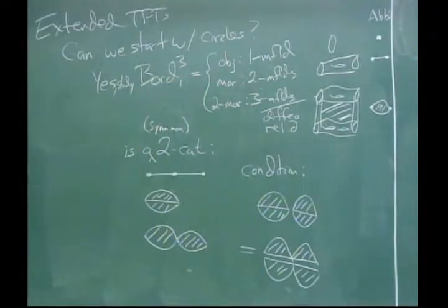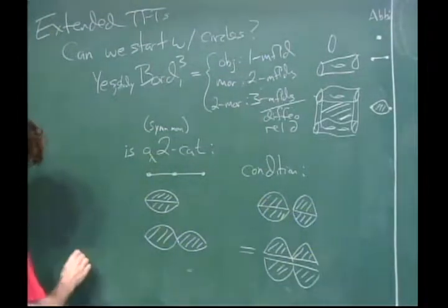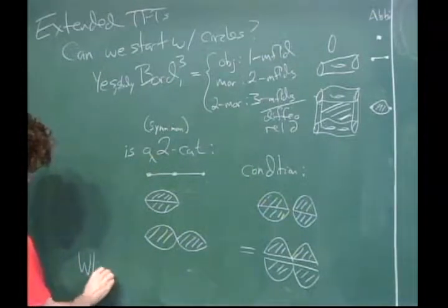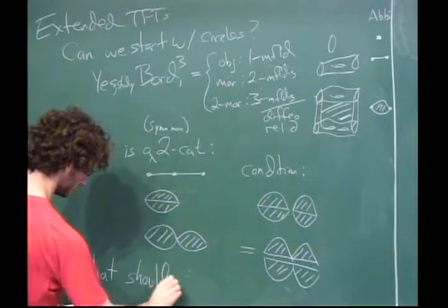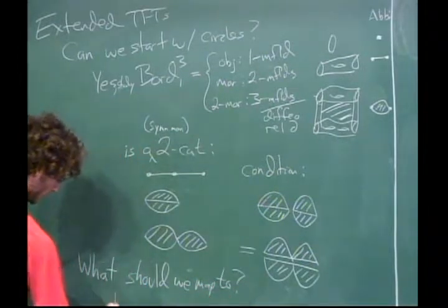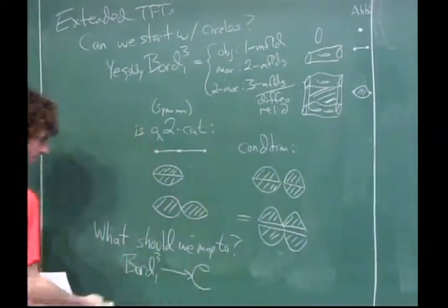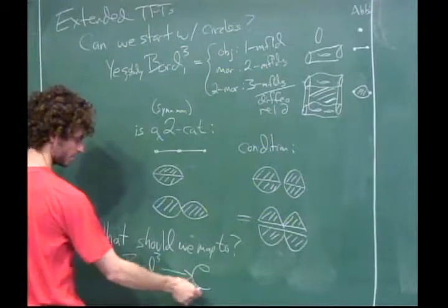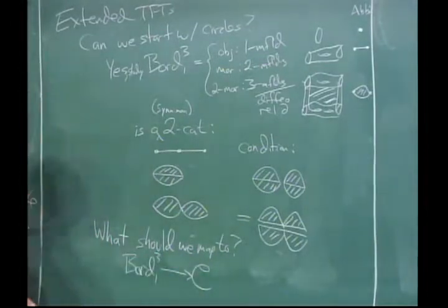This is our idea for the geometry we want to start with. The question is now what should the algebra be — what should we map to? We want some functor out of this geometric bordism category into some kind of target. That thing should be some kind of symmetric monoidal two-category, and it should be built out of algebra because we want some kind of algebraic invariance of our manifolds.